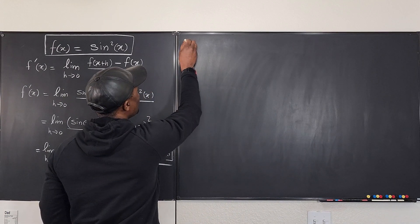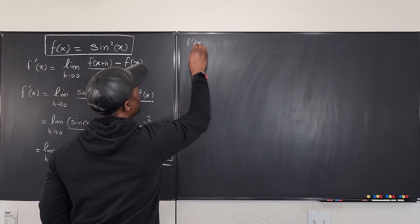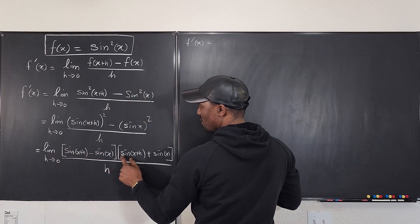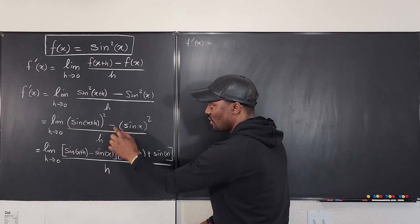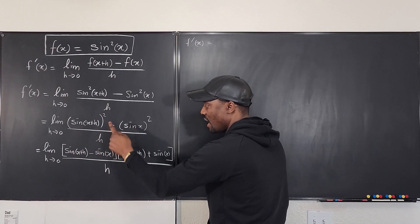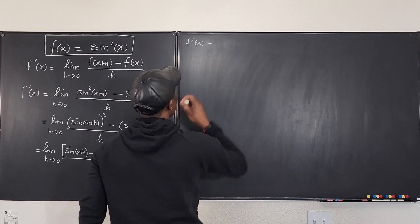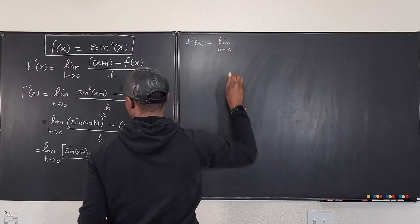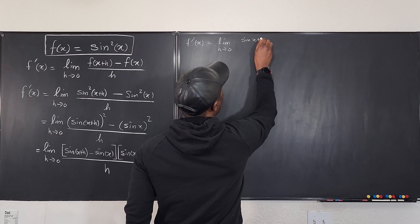So f prime of x is equal to the limit — I'm going to give the limit to each of the products, but I'll give the h to one side. Remember, you can give h to either factor when there's a product, and you can only have one h. So this is going to be the limit as h goes to zero of sine(x+h) minus sine x over h.